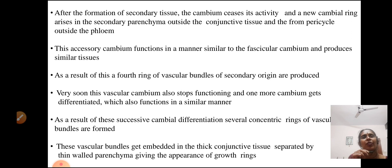As a result of this, a fourth ring of vascular bundles of secondary origin is produced. Very soon this vascular cambium also stops functioning and one more cambium gets differentiated, which also functions in a similar manner. Like this, successive cambium differentiation results in several concentric rings of vascular bundles. These vascular bundles get embedded in thick conjunctive tissue separated by thin-walled parenchyma, giving the appearance of growth rings.